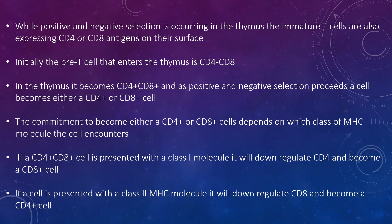Immature T cells also express either CD4 or CD8 antigens on the surface. Initially, the pre-T cell that enters the thymus is CD4-negative and CD8-negative. In the thymus it becomes CD4-positive and CD8-positive, and as positive and negative selection proceed, a cell becomes either a CD4-positive or CD8-positive cell. Commitment to become either a CD4-positive or CD8-positive cell depends on which class of MHC molecule the cell encounters. If a CD4+CD8+ cell is presented with a class 1 molecule, it will downregulate CD4 and become a CD8-positive cell. If a cell is presented with a class 2 MHC molecule, it will downregulate CD8 and become a CD4-positive cell.